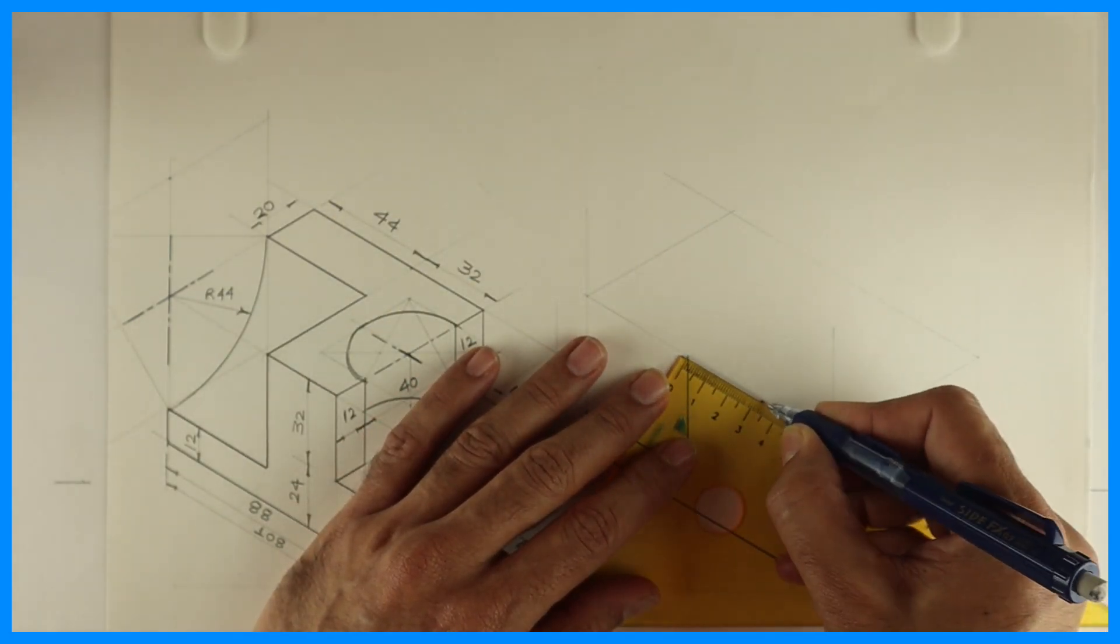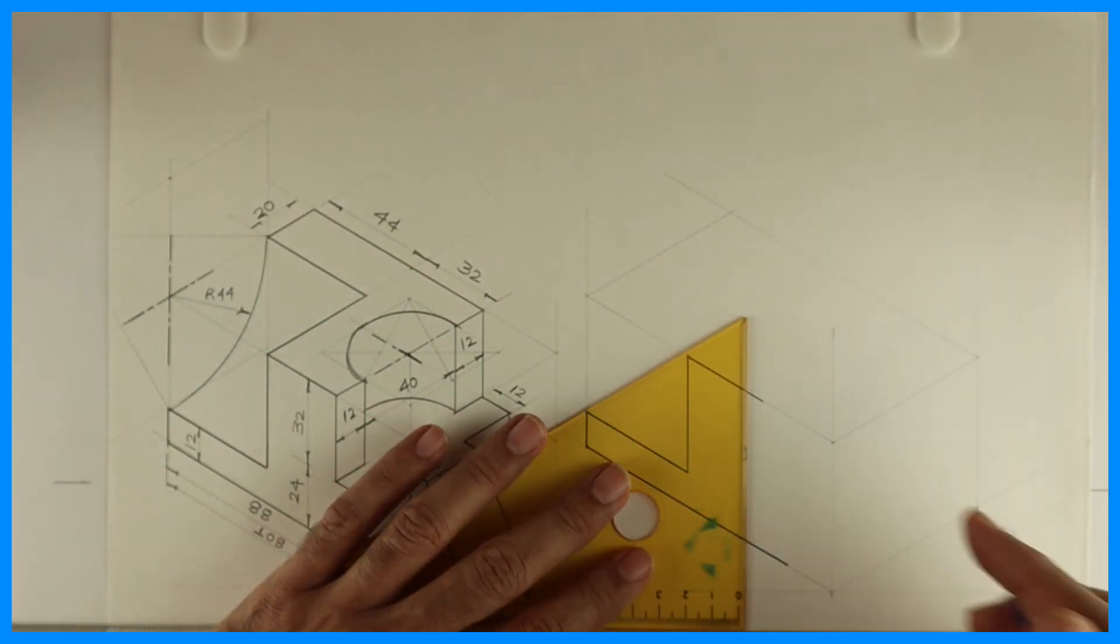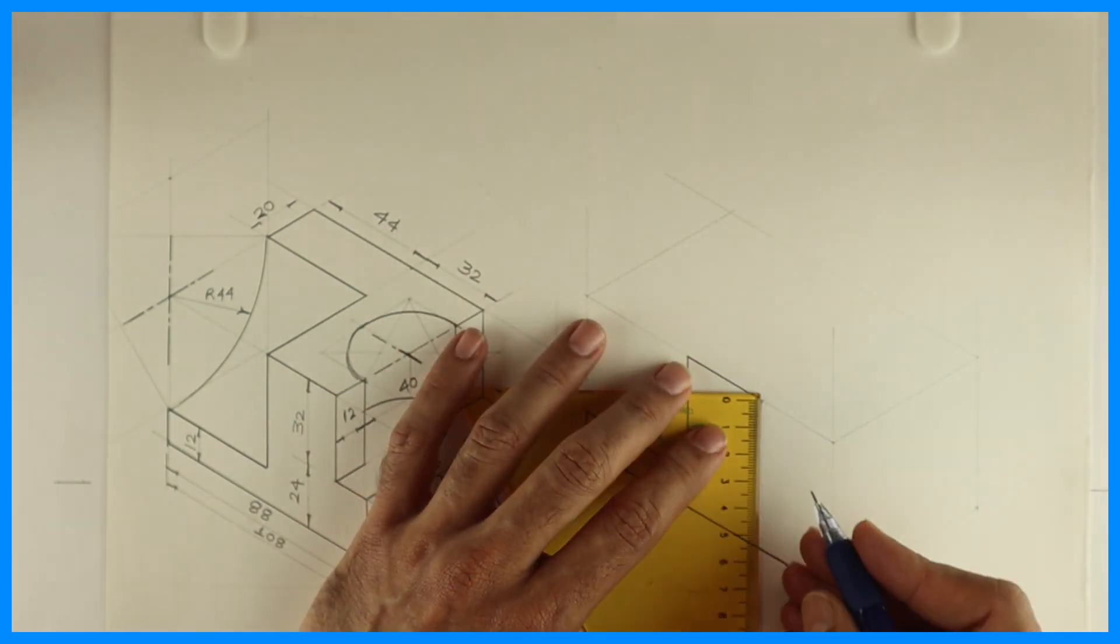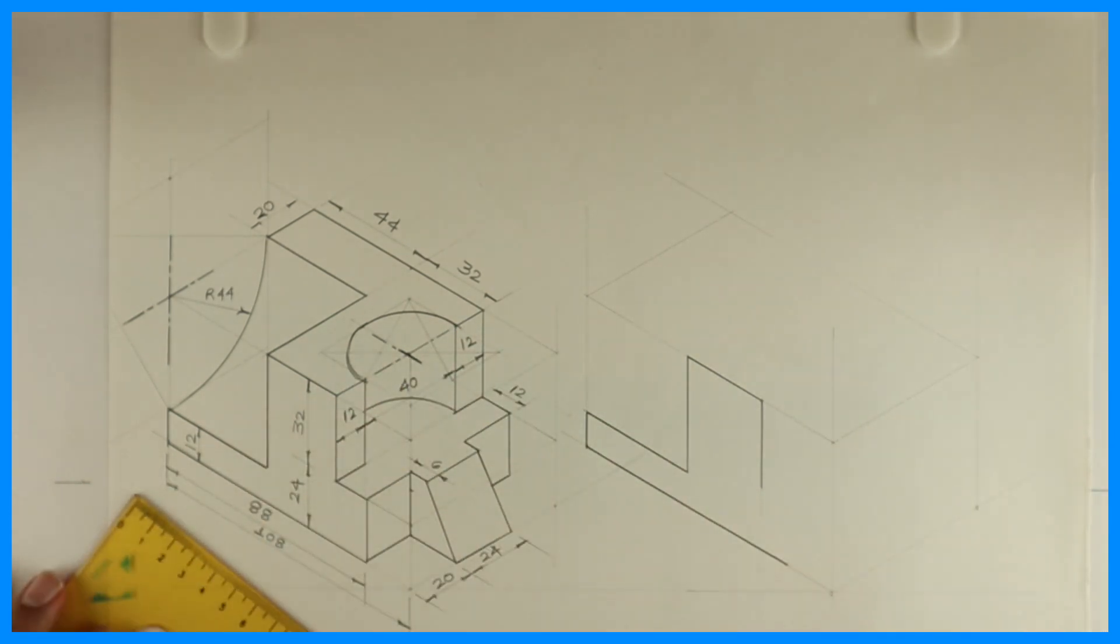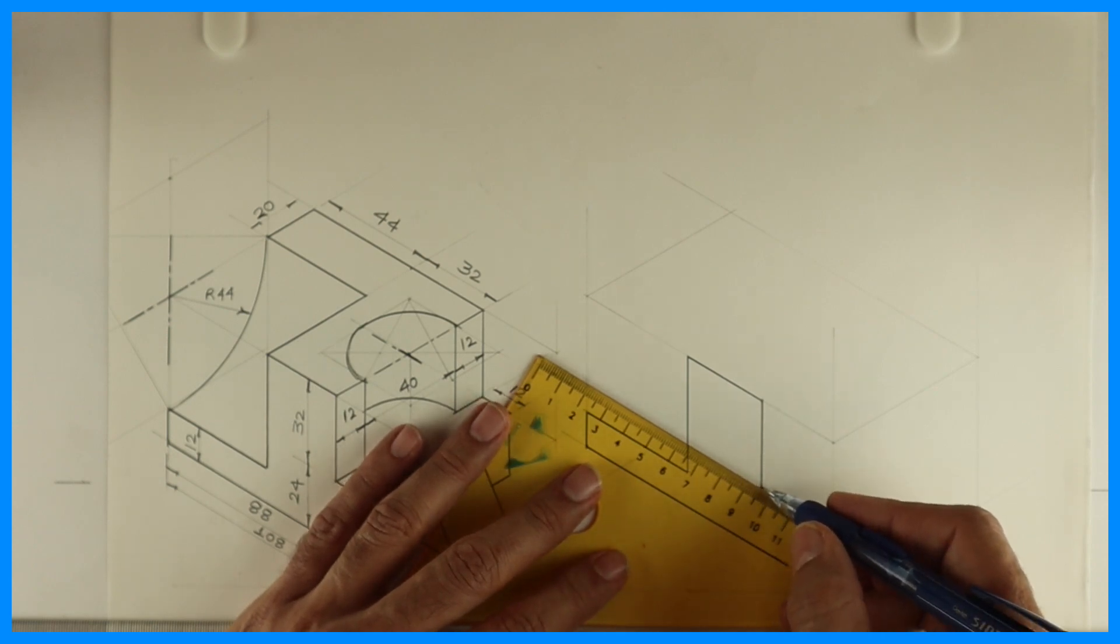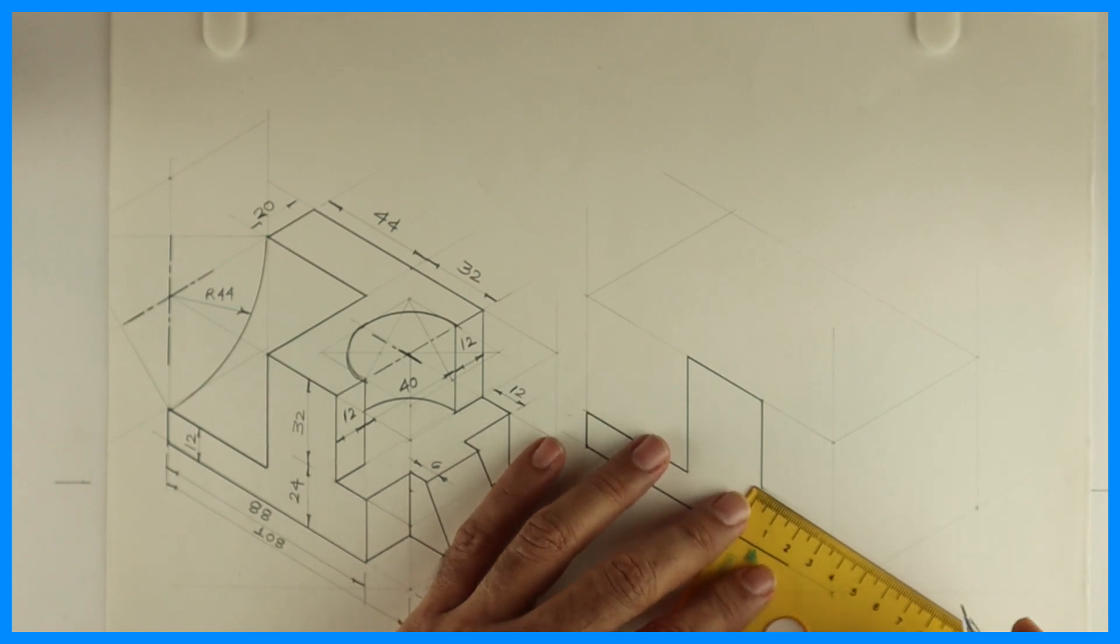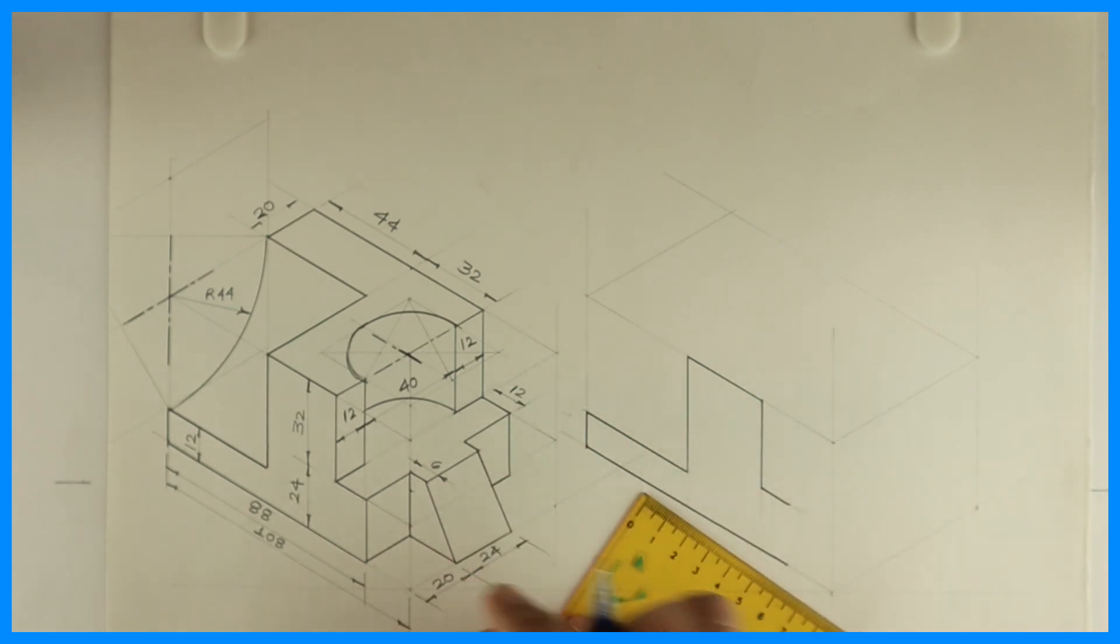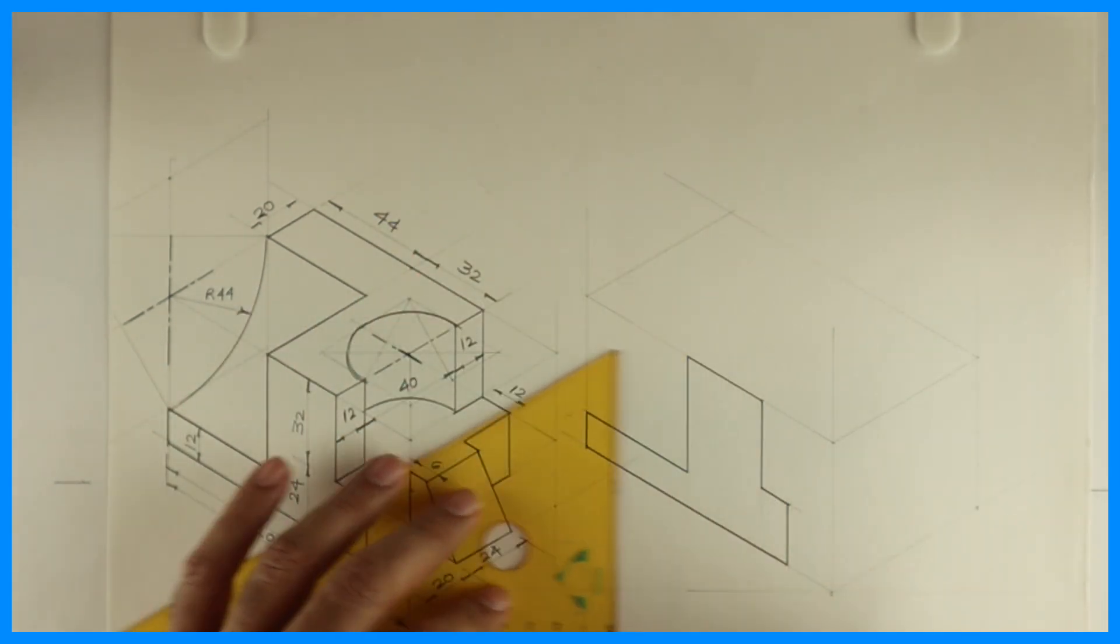So we have to draw all lines inclined at 30 degrees in isometric. Remember that. Then you go down by 32. Then you take 12 and you draw vertical line. So we are done with the front portion.